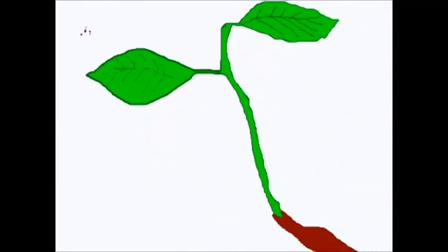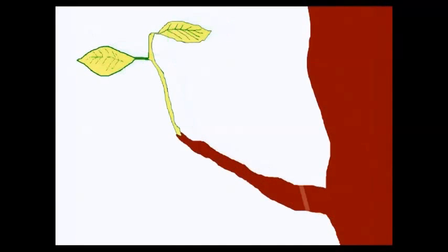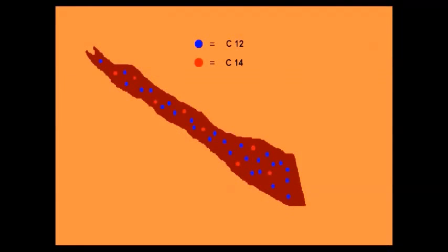In the atmosphere, C14 combines with oxygen to make carbon dioxide, which is then absorbed by plants, and into the bodies of animals that eat the plants. The ratio of these two isotopes in animals and plants is roughly the same as the ratio in the atmosphere around them.